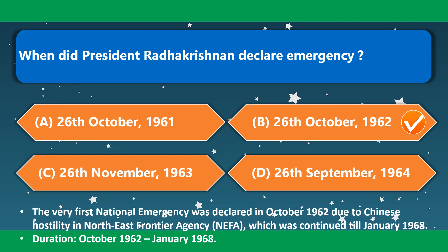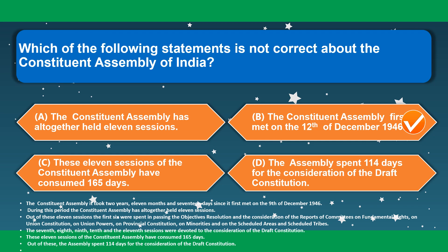Which of the following statements is not correct about the Constituent Assembly of India? The Constituent Assembly had altogether 11 sessions — correct. The Constituent Assembly first met on 12th December 1946 — not correct, because it first met on 9th December 1946. These 11 sessions consumed 165 days — correct. The Assembly spent 114 days for consideration of the draft Constitution — correct. So the correct option is option B.